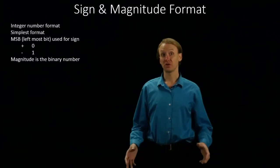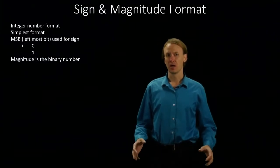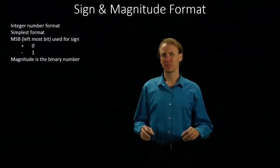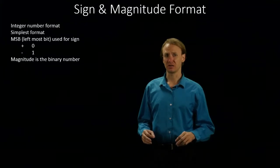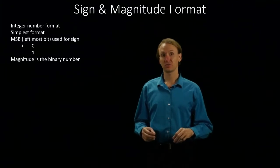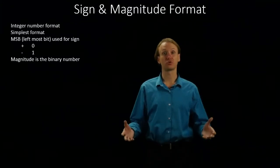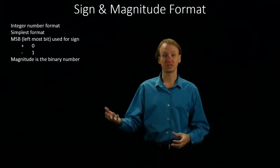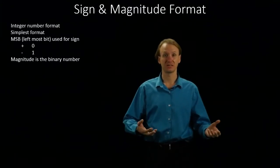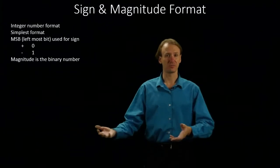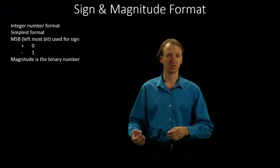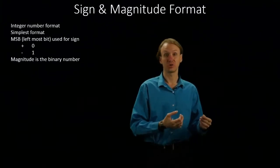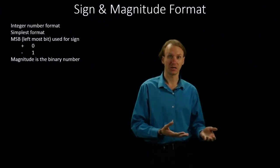So far we've looked at a lot of numbers but we've seen all of them from a mathematical perspective. This meant that we had all the symbols we could possibly want. We can have pluses, minuses, we can have arithmetic symbols, we can have a symbol to specify which base we're in.